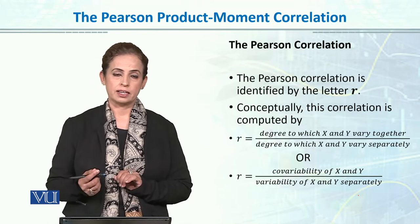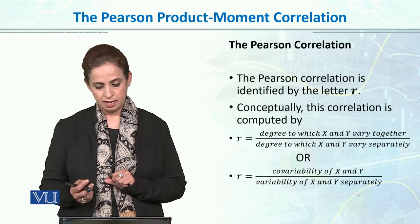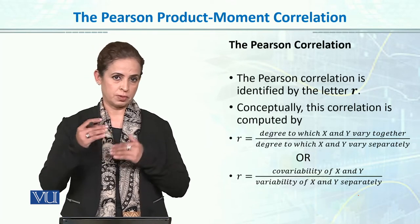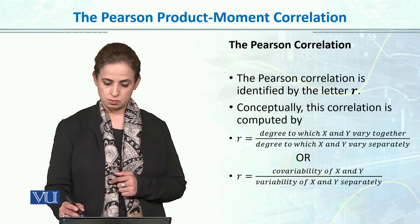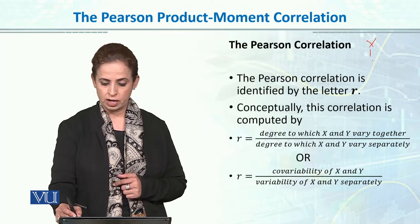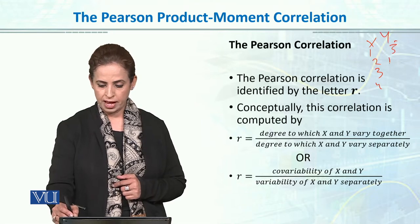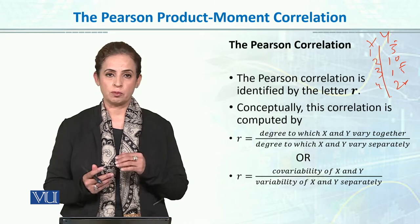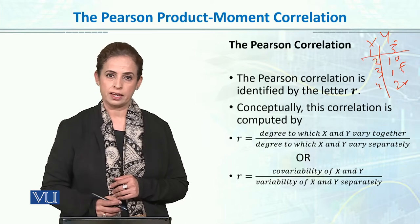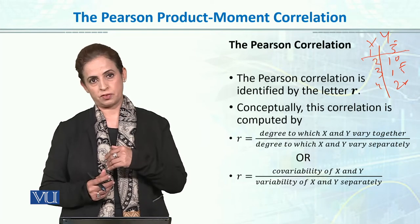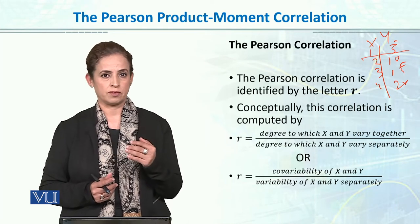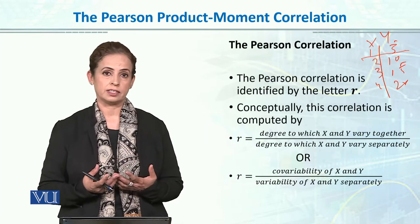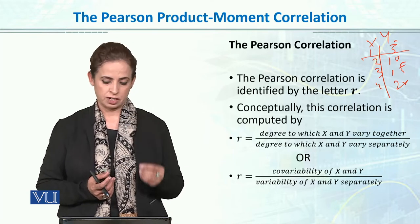We calculate the formula in this way — mainly what we are trying to find out is the variability of the two scores. For example, if my score on x is 1, 2, 3, 4 and y is 5, 10, 15, 20, it means that variability is not only the co-variability of x and y, but also variability within the x variable and within the y variable. So when we take out variability, we take out the product, which actually tells us the strength of that relationship.